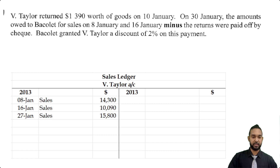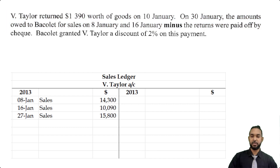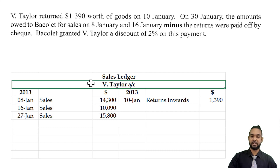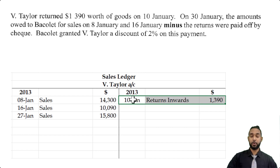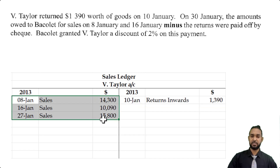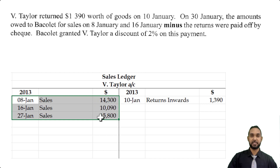V. Taylor returned $1,390 worth of goods on the 10th of January. The return goes on the credit side of the account. V. Taylor is a debtor — a debtor is an asset. When the debtor returns goods, they no longer have to pay for those goods, so the total amount owed to us goes down — that's a decrease to the asset account, and we record any decrease in an asset with a credit. The sales on the debit side are increases because when you make a credit sale, the debtor owes you money, and anytime anyone owes you money that's an asset increasing.